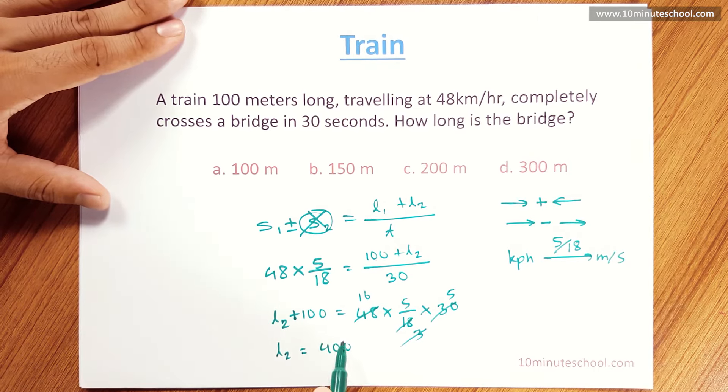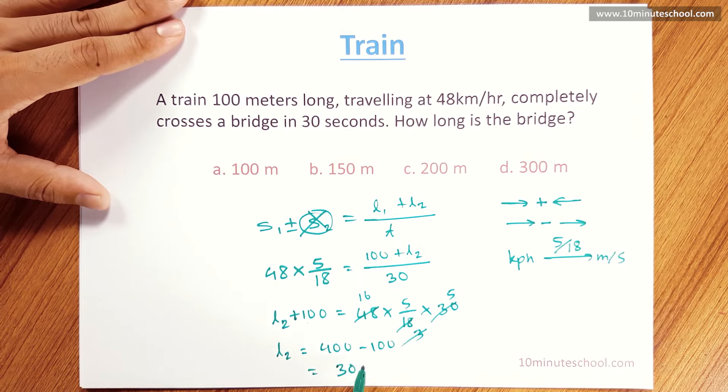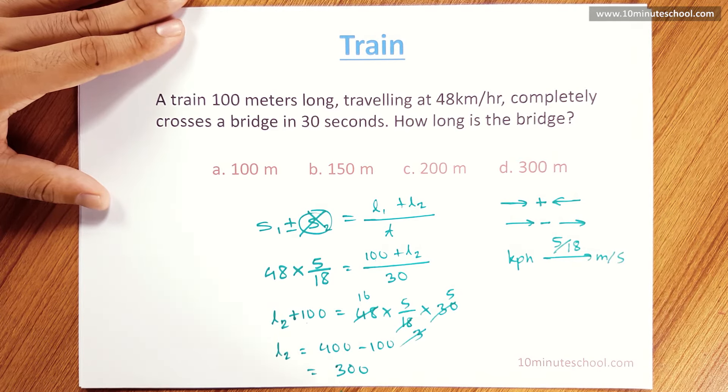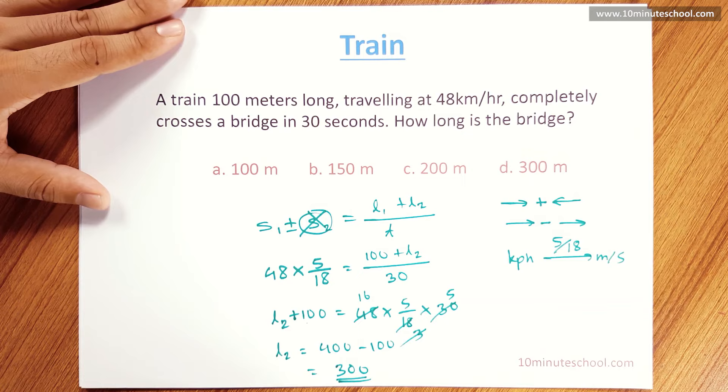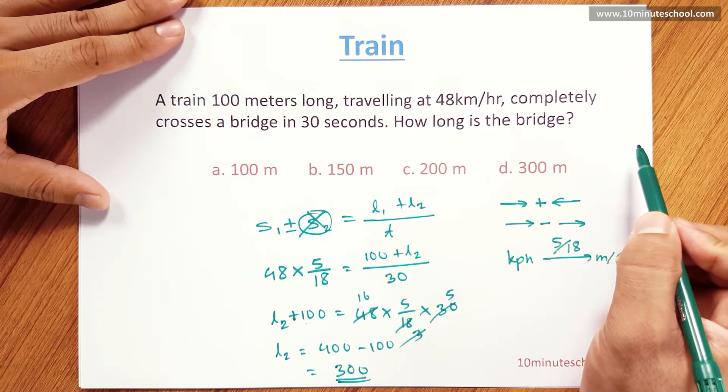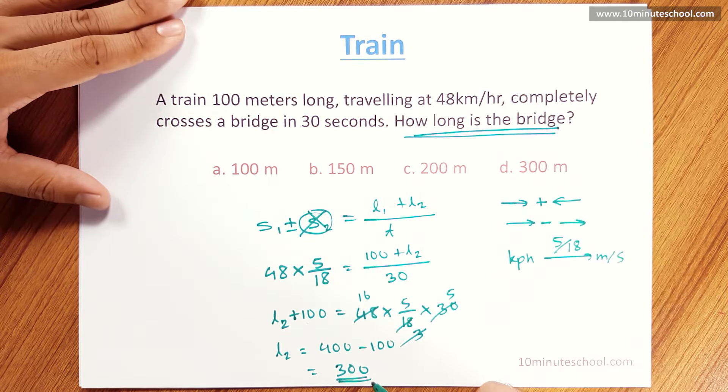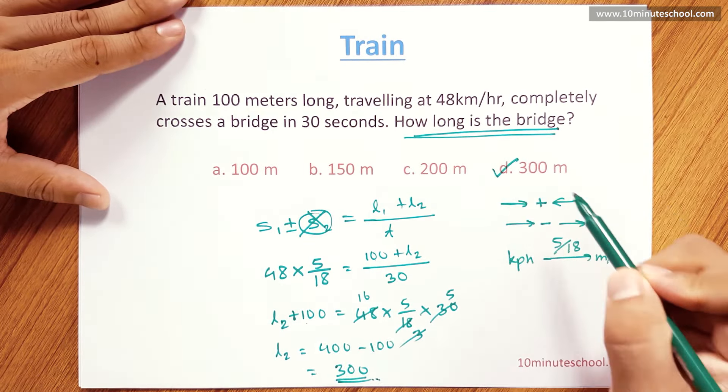L2 is equal to 400 minus 100, which equals 300. That means L2 value is 300 meters. How long is the bridge? The bridge length is 300 meters.